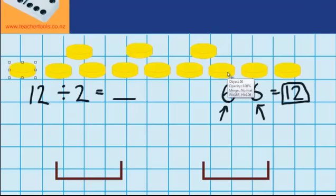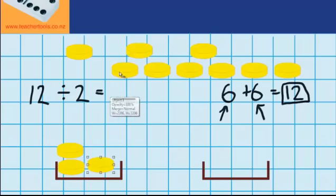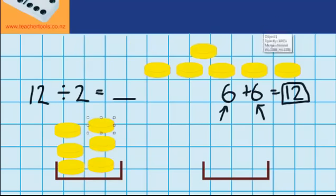Well, let's use the materials we've got here to see if we're right. So we can give 1, 2, 3, 4, 5, 6 to pirate 1.